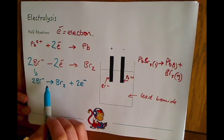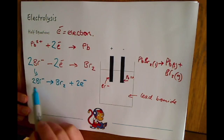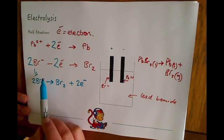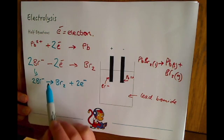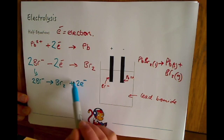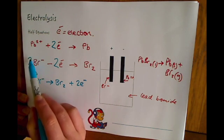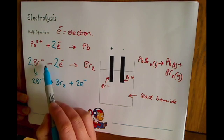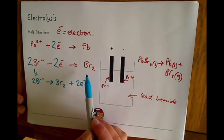So just try and read out and turn these equations into words. So literally say to yourself, we've got two bromide ions turning into bromine and giving away two electrons. And that's the same thing as saying we've got two bromide ions that are losing two electrons and turning into bromine.